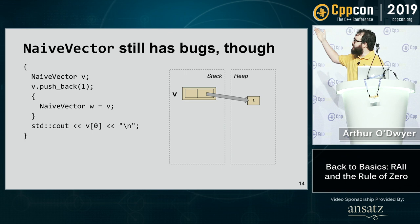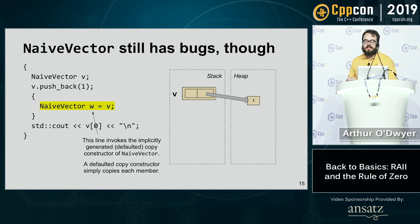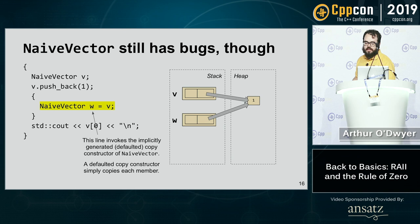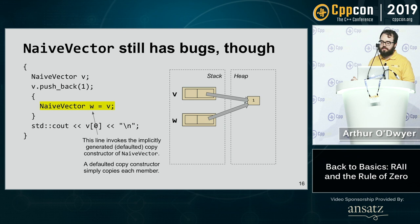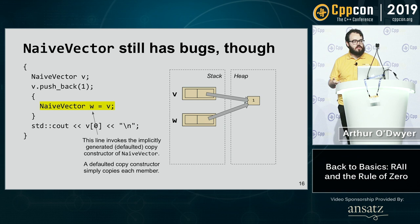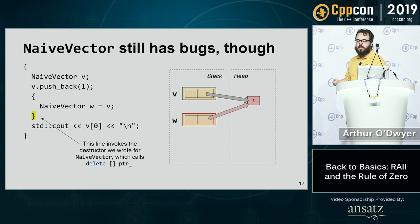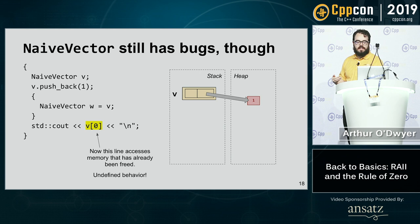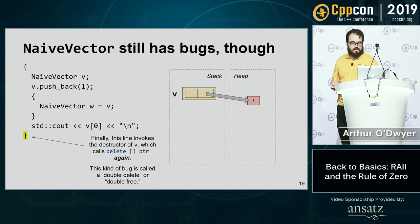However, it still has bugs. If I create a naive vector v, push one into it, then create naive vector w as a copy of v, the defaulted copy constructor just copies each member — including the pointer. Both pointers now point to the same heap allocation. When we hit the closing curly brace, w's destructor frees the heap allocation. Then accessing v uses memory that's already been freed — undefined behavior. And when v is destroyed, that double-deletes the heap allocation.